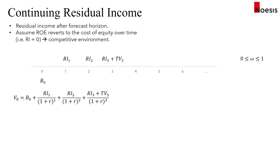What we need to do is take the book value and compute the present value of RI1, RI2, and RI3, plus the terminal value which is in period three.